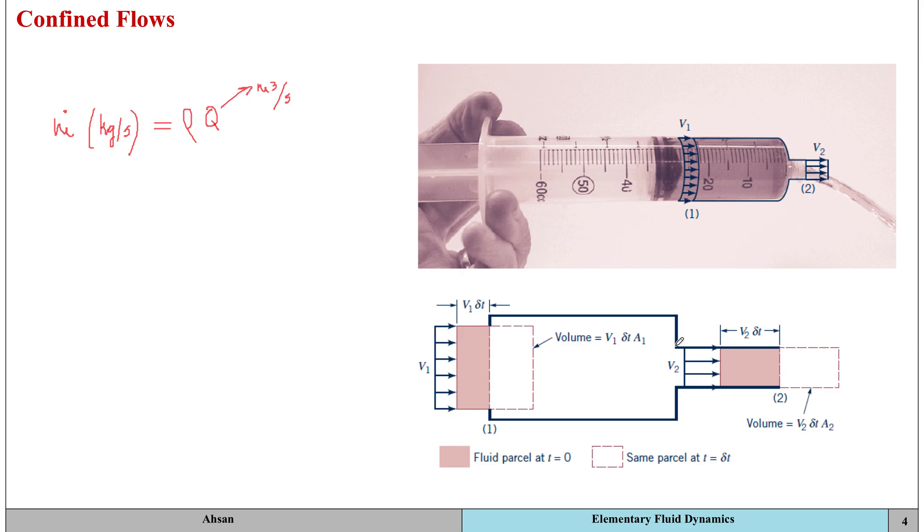At the outlet, if I assume there's no subscripts, then the outlet area is going to be A and the fluid is flowing across this area with an average velocity of v. The volume of the fluid that is crossing this area in time interval delta t is going to be equal to velocity times area times delta t.